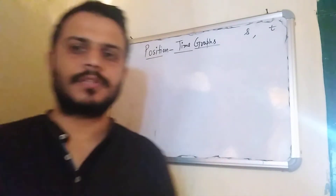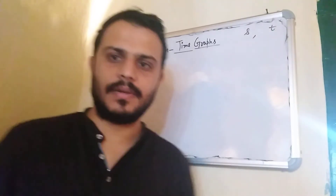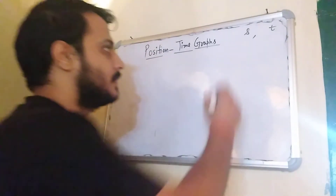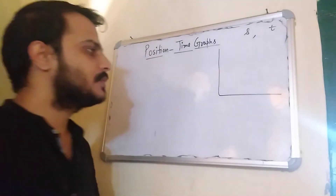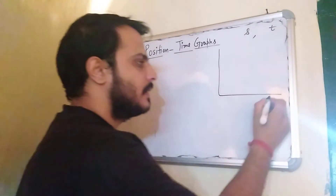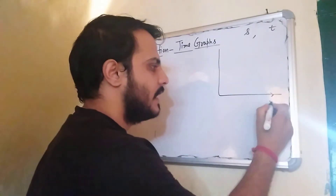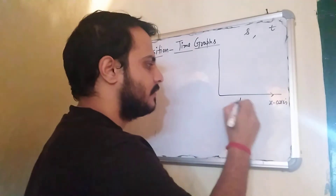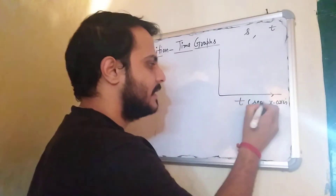Now we will see how we get velocity from it. Let us take an example and try to plot a graph. We have taken a body which is in motion. This is our x-axis, and we have plotted time on it, taken in seconds.